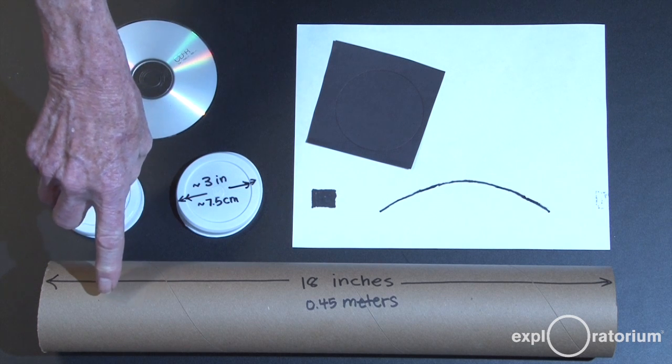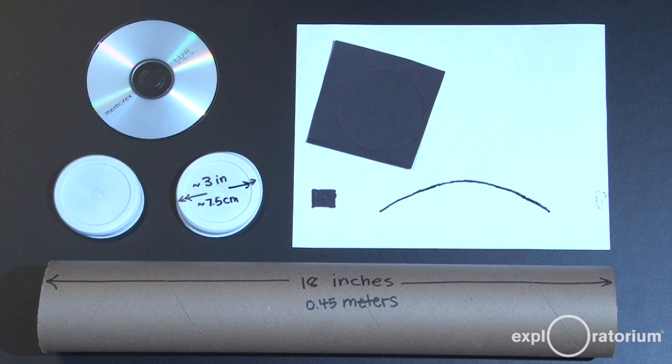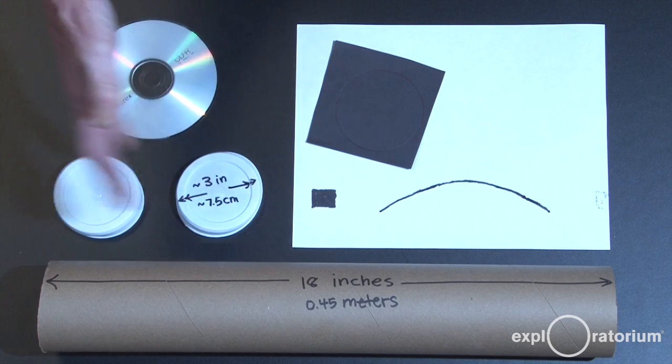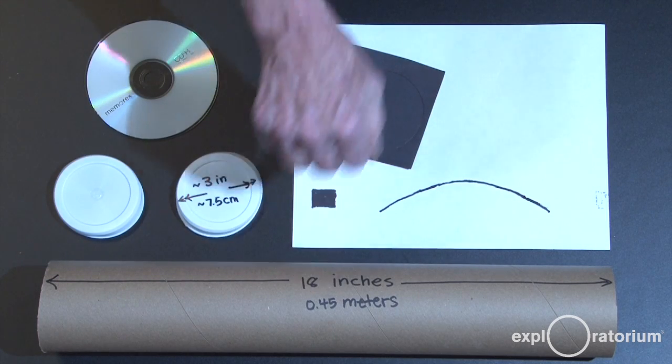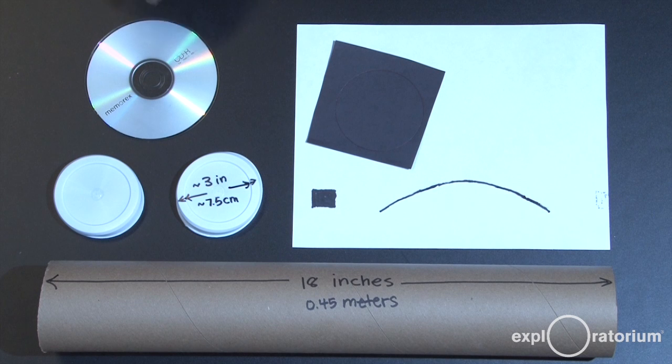You'll need to get a poster tube. This is a 3 inch diameter poster tube. They come at about 3 foot lengths. You can cut them roughly in half. That'll give you a tube about 18 inches long or 0.45 meters long. You'll need the two end caps to shield out light from the tube.